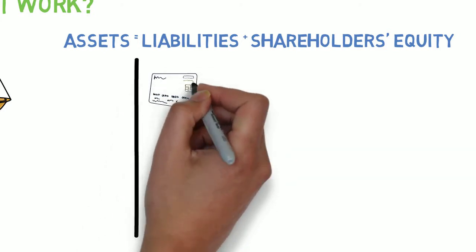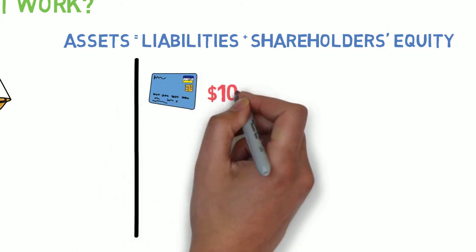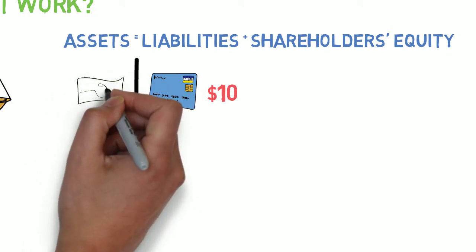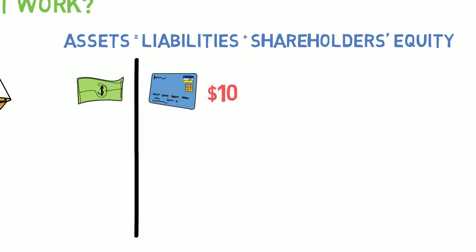So if we were to take a $10 loan out for our business, we'd also have to put $10 on the asset side because we got cash from that loan which would balance out the equation.